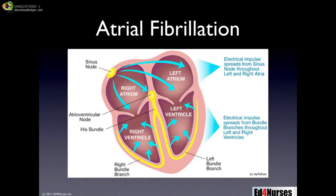Atrial fibrillation is a dysrhythmia that occurs because of abnormal ectopic beats occurring somewhere outside the normal conduction pathway. In the normal conduction pathway, the sinus node at the top left generates an impulse, sending it through the atria and down to the atrioventricular node — the AV node. The AV node delays the impulse for a split second, then sends it down through the bundle and to the Purkinje fibers, where it spreads out to the ventricles.